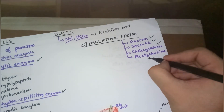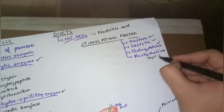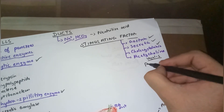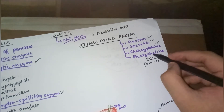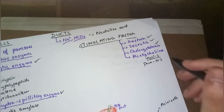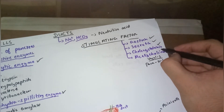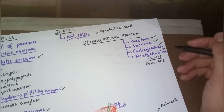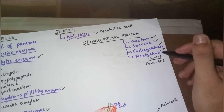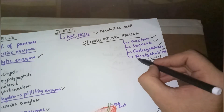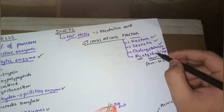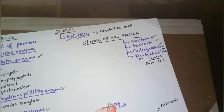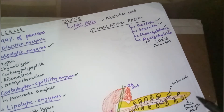Acetylcholine is secreted by the vagus nerve through parasympathetic stimulation of the pancreas. It is a neurotransmitter that stimulates pancreatic secretion. Acetylcholine increases GI motility and is secreted not only in response to food but also for digestion and other purposes, after which the pancreas starts its enzyme secretion.